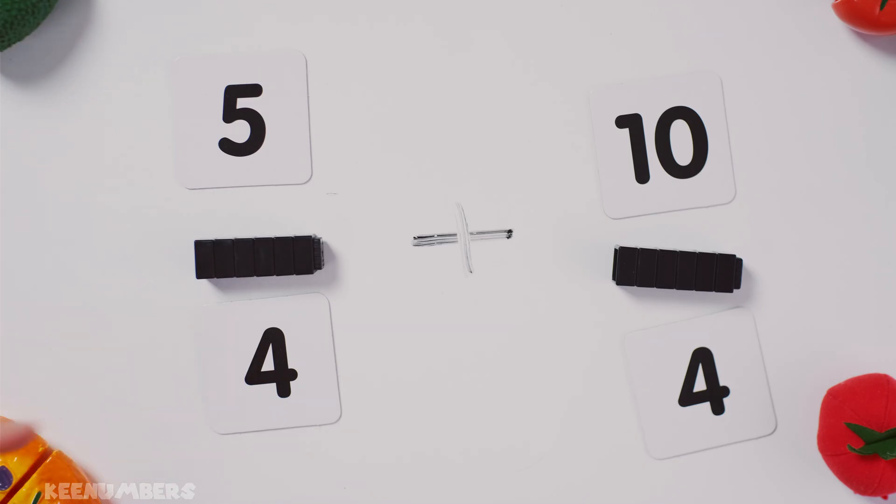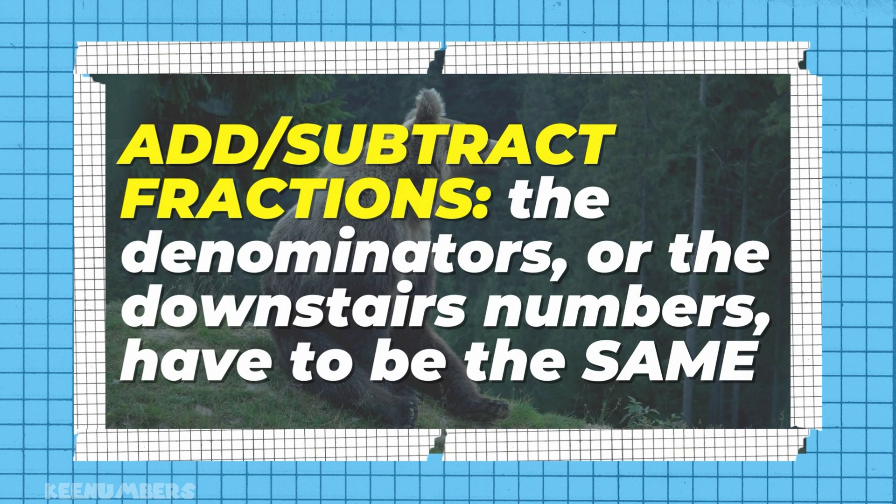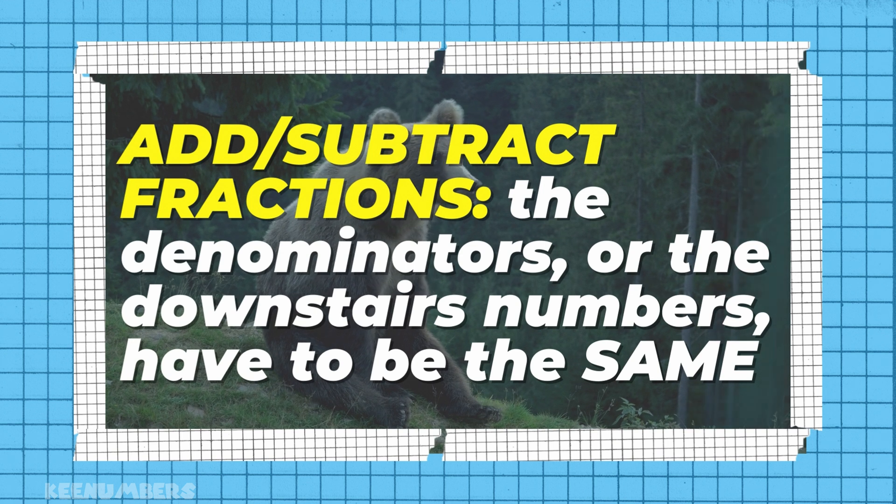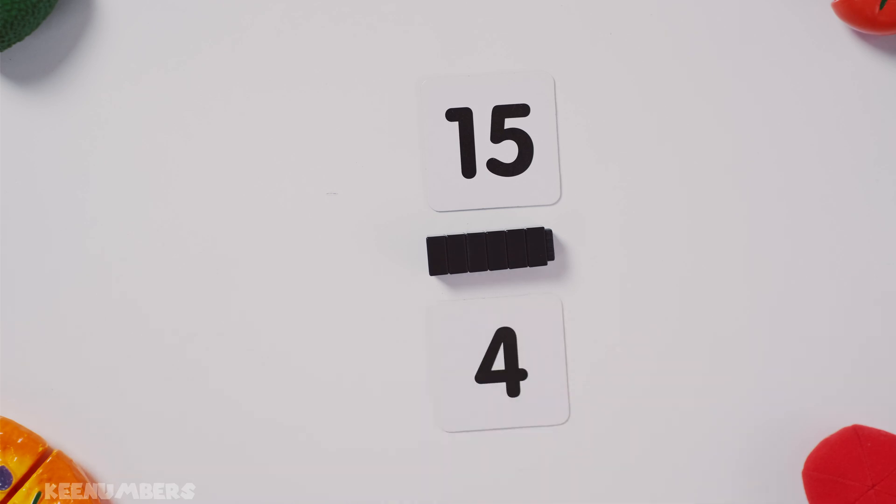Let's look at 5/4 plus 10/4. Now, if we just recognize that we are working with like denominators, 4 downstairs, 4 downstairs, check. We can combine like fractions. 5/4 plus 10/4. That's going to give us, well, since the fourths are the same across the board, 5 plus 10, 15/4. 15/4.